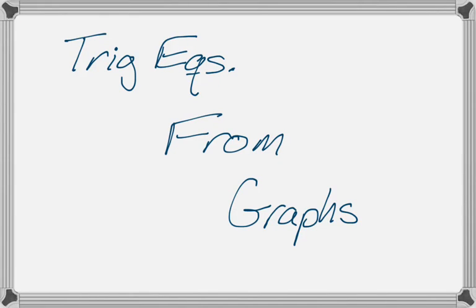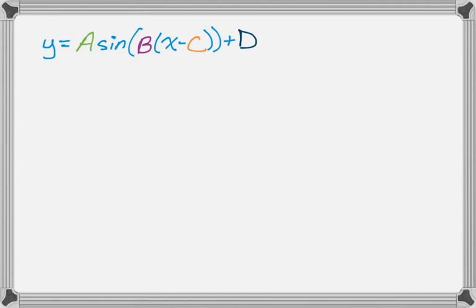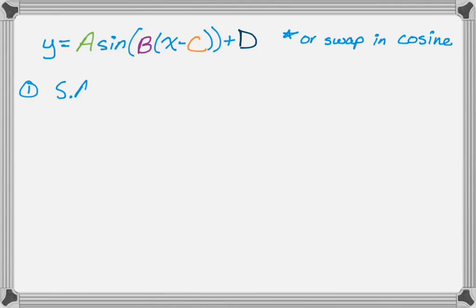In this video we're going to talk about finding trig equations given graphs, specifically for sine and cosine. We might have something that looks like y equals a times the sine of b times the quantity x minus c, plus d at the end. You can just swap out sine for cosine — replace sine with cosine, it's exactly the same.